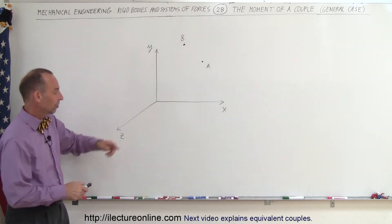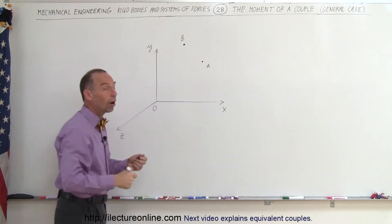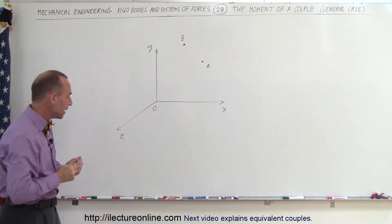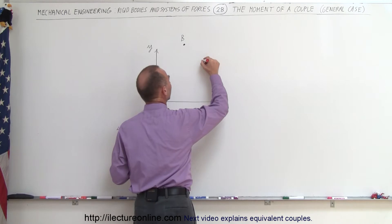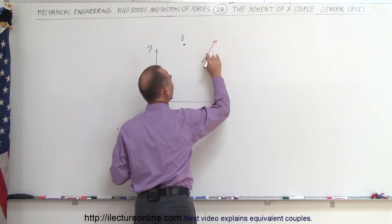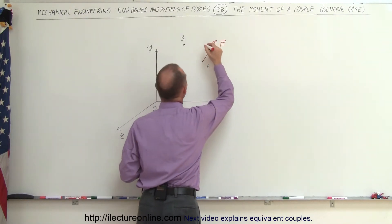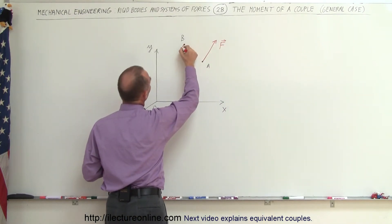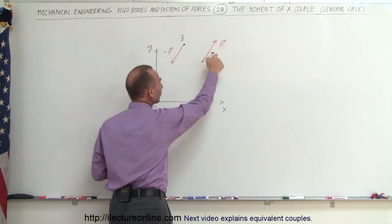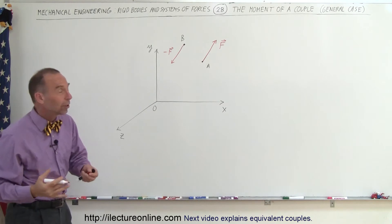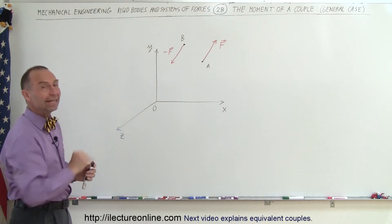Here we have the coordinate system with the origin, and notice there are two arbitrary points in space, A and B. Now let's say there's a force acting in this direction, situated starting at A — let's call this force F. And then here we have another force, let's call it minus F, because it's in the opposite direction of F. Again, they're equal in magnitude, just opposite in direction, and they form a plane in space.